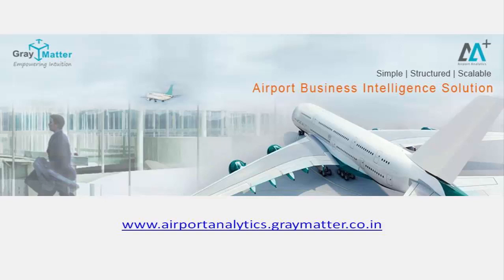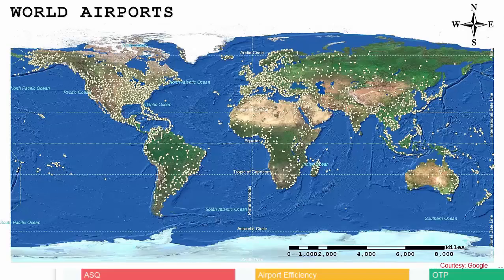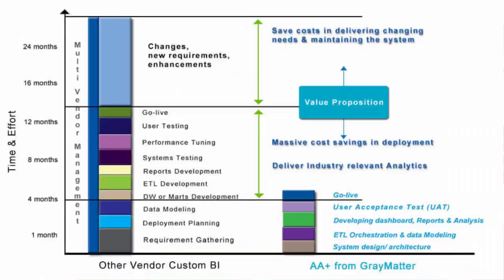Hello everyone. Welcome to Grey Matters Airport Analytics AA Plus product capability demo. AA Plus is a comprehensive BI solution for decision makers across all stakeholders of any global international airport. The product offers a bouquet of airport-specific dashboards and reports with over 400 plus KPIs and measures. This repository is expanded and enriched on a continuous basis, keeping pace with the best practices followed in various geographies, airport segments, and end-user suggestions.